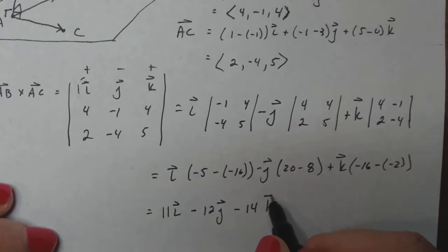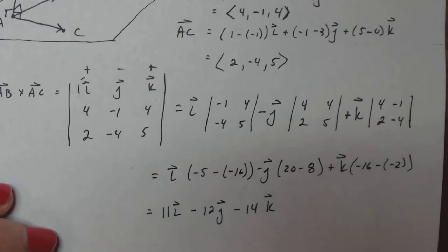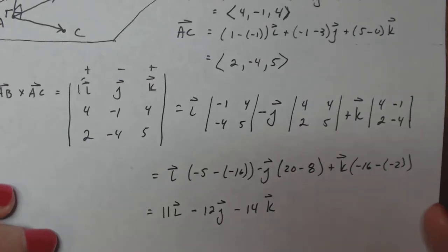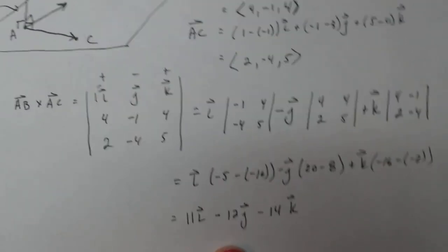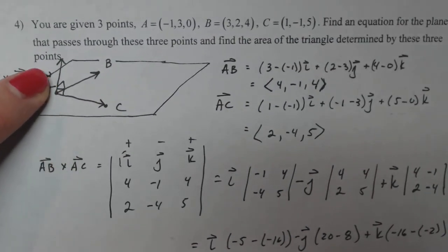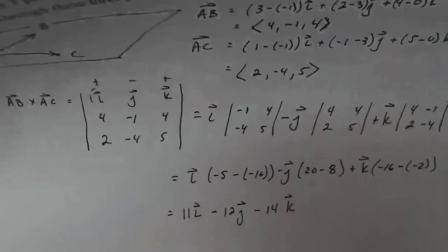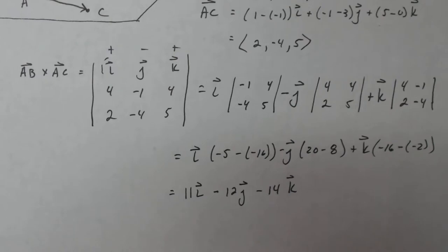I'm getting a different number than on my practice run, but hopefully it looks the same. Negative 16 minus minus 2. Yeah, that works. So negative 16 plus 2 gives me negative 14. So there, this vector here, AB cross AC. This vector right here is the vector that's normal right here.